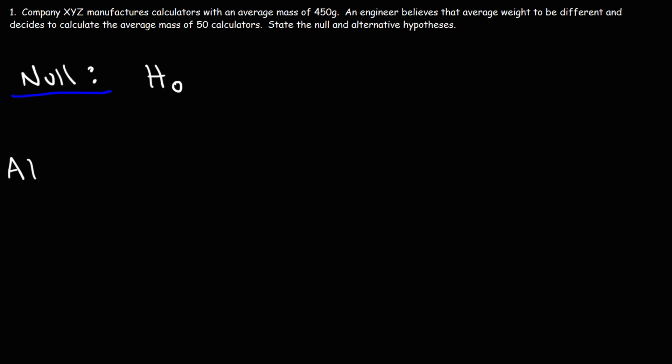The alternative hypothesis is basically the contender. It's contradictory to the null hypothesis. It has a symbol, H sub A. It's what the researcher tries to prove in order to disprove the null hypothesis. If he fails to disprove it, that means the null hypothesis is likely to be correct.